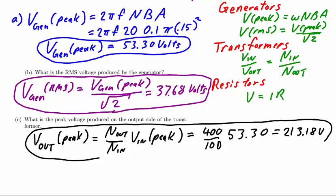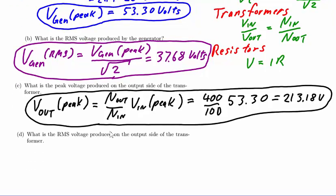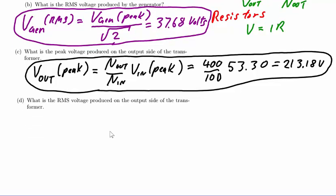Part D involves a very similar calculation, except in this case, we're asked to find the RMS output voltage of the transformer. We have two possibilities, both of which will give us the same result.